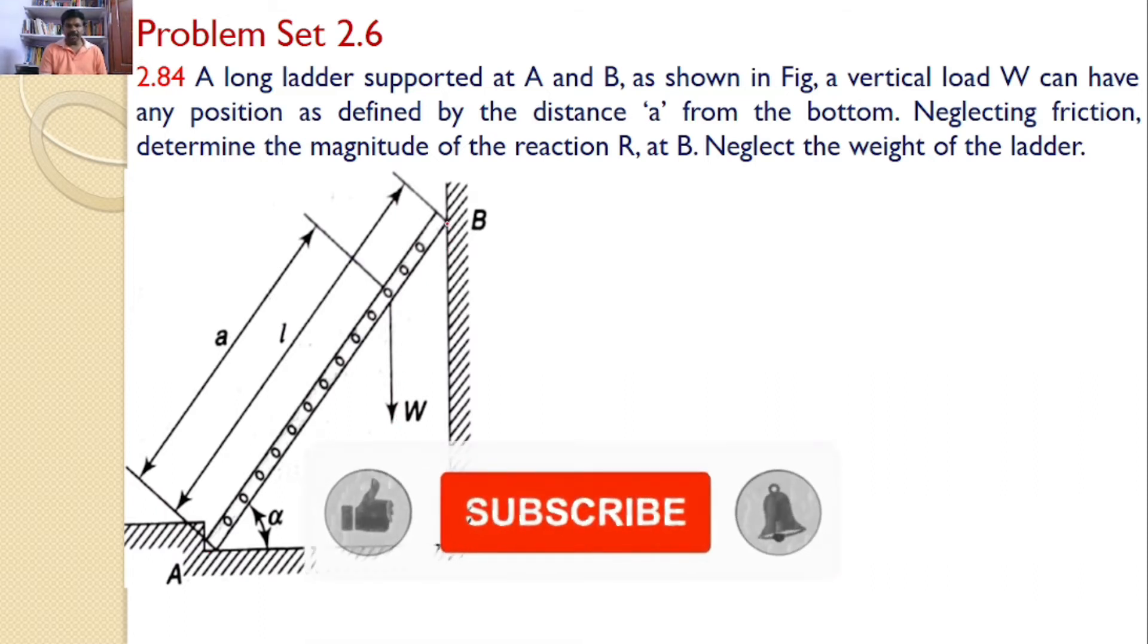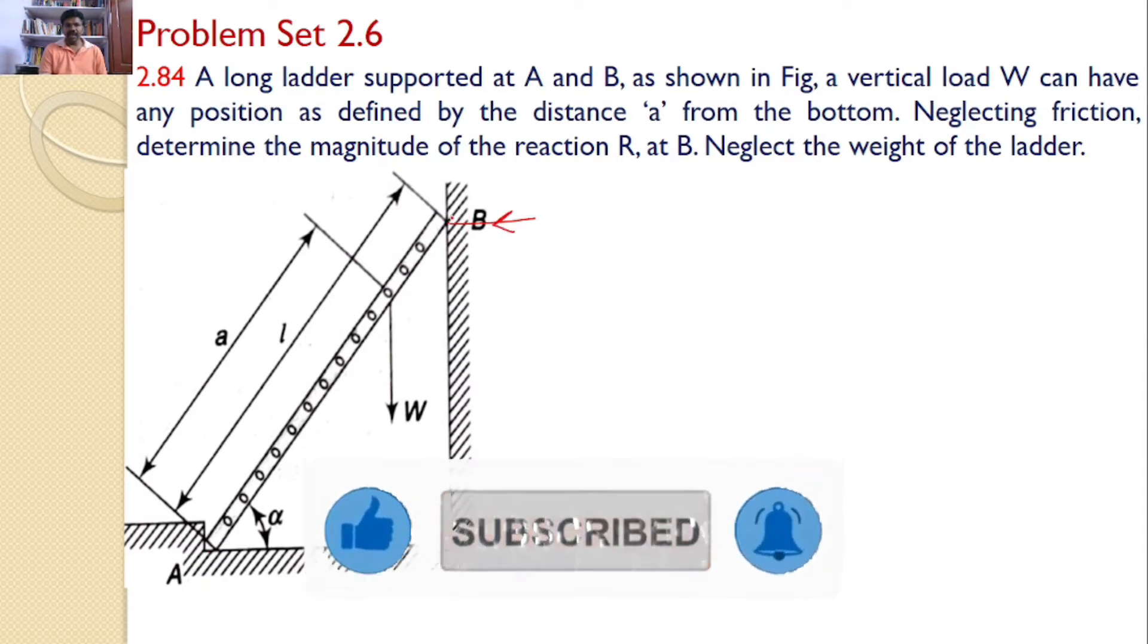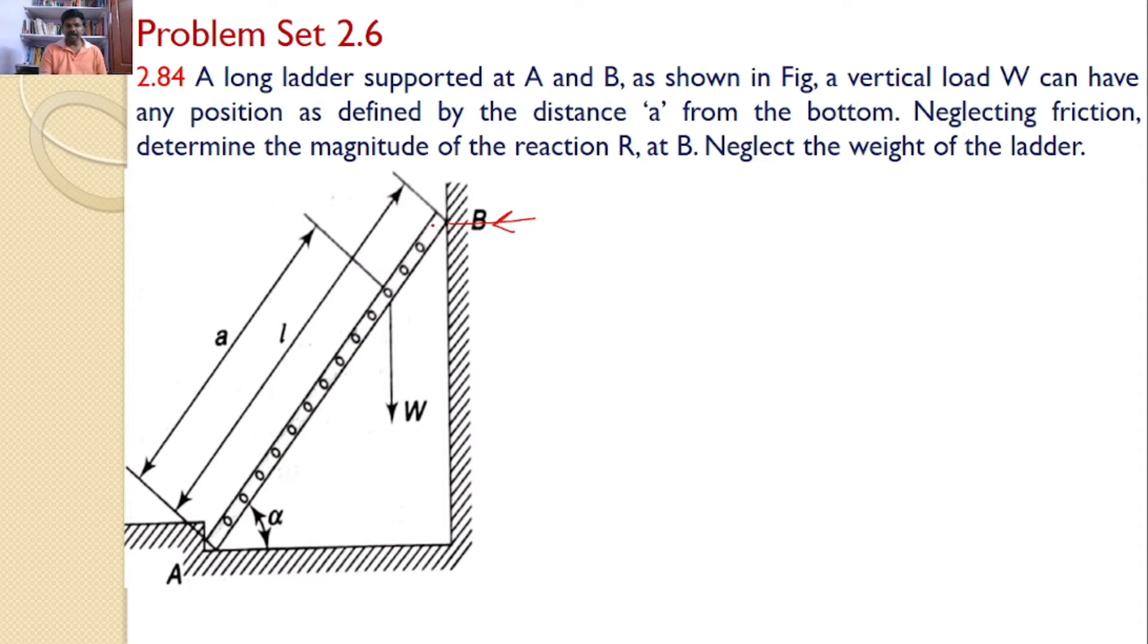And at point B, there is only one reaction. The reason being, at point B, the ladder is not permitted to move in the horizontal direction. Hence, a reaction force will develop. But at B, the ladder can be permitted to move in the vertical direction. Hence, no vertical reaction will develop.